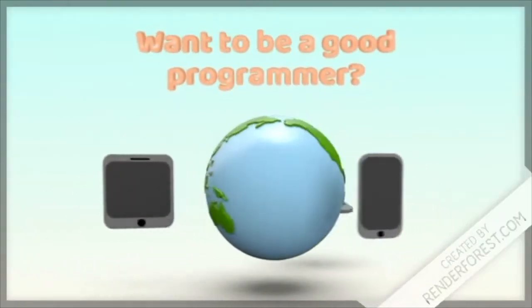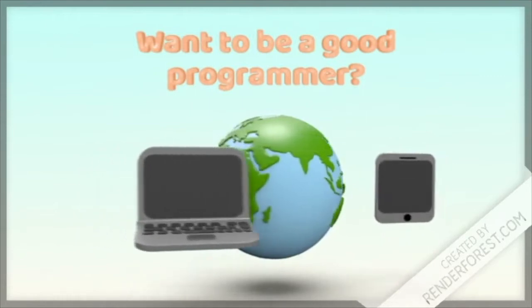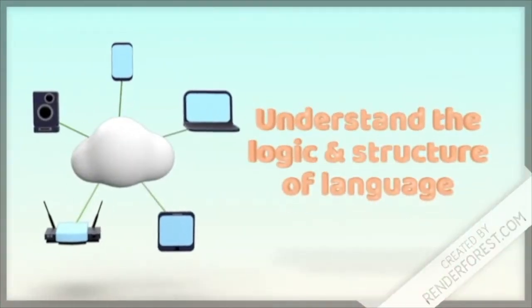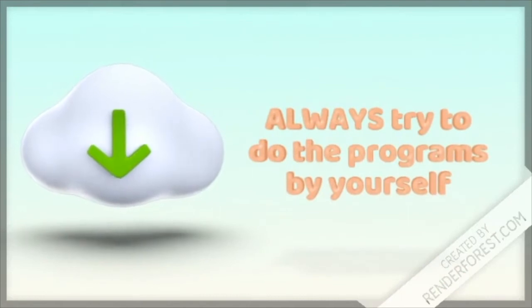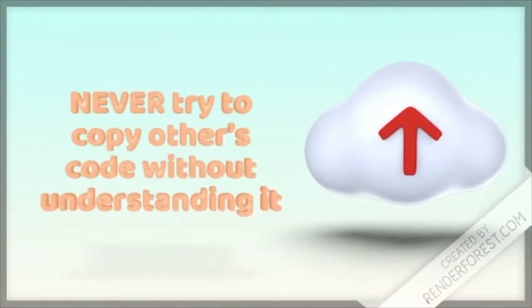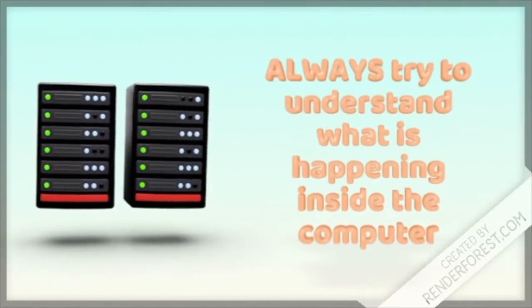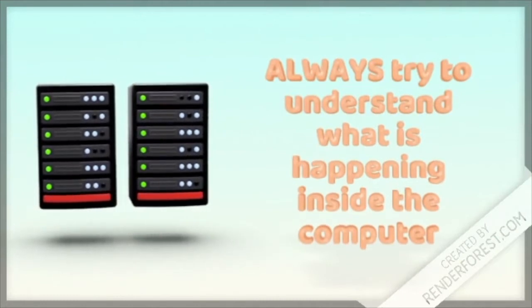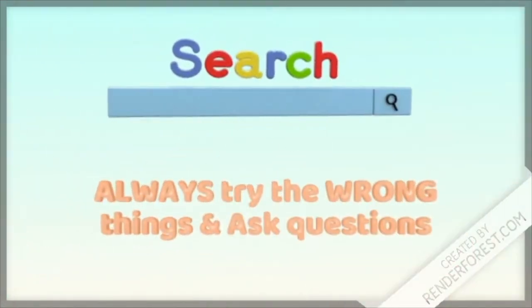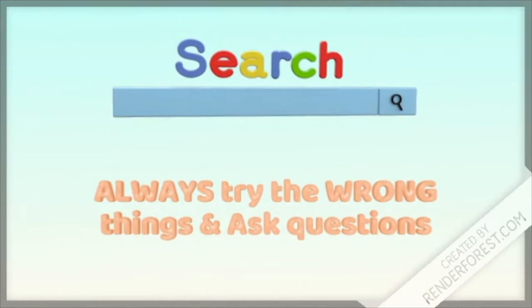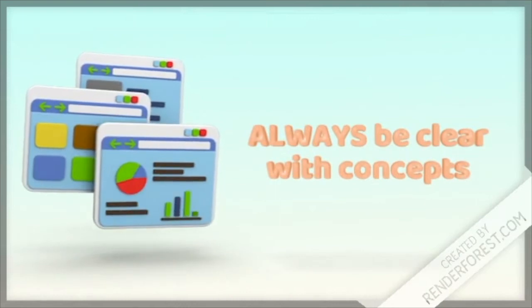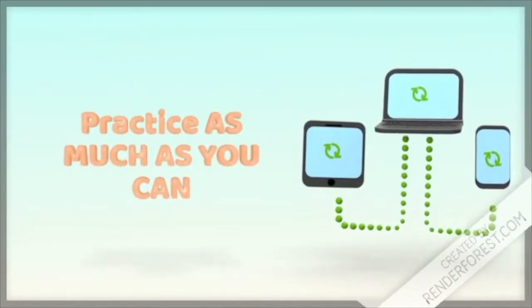If you want to be a good programmer, you need to follow a few rules. Understand the logic and structure of the language. Always try to do the programs by yourself. Never try to copy others' code without understanding it. Always try to understand what's happening inside the computer while executing the program. Always try the wrong things and ask questions — why not like this? Why like this? Always be clear with the concepts of what you are learning. Practice as much as you can. Do more programs — that will enhance your confidence.